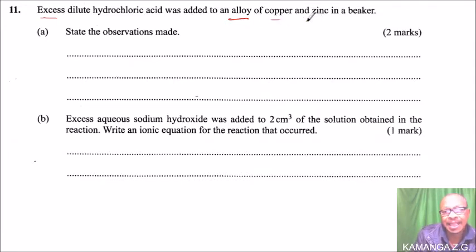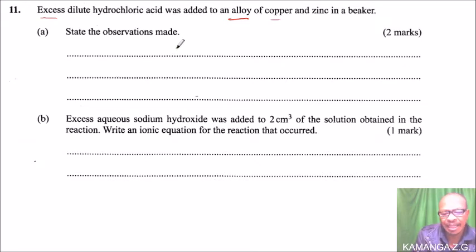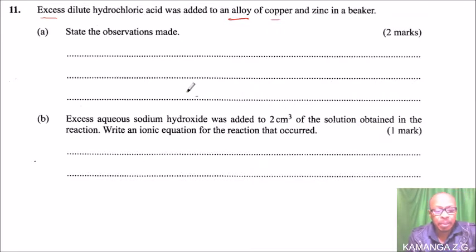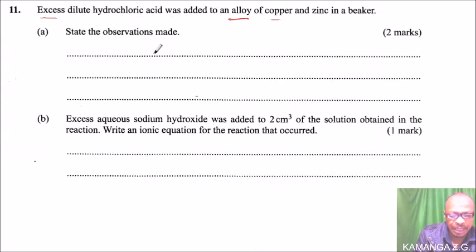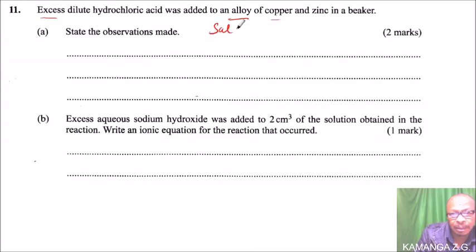This means that zinc will react with the excess dilute hydrochloric acid. The general rule is that an acid reacts with a metal to produce a salt and hydrogen gas — those are the products when a metal reacts with an acid.